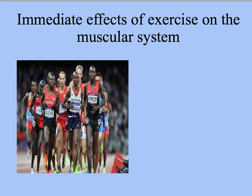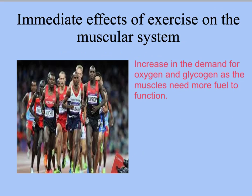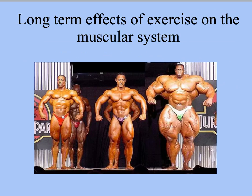Looking at the immediate effects of exercise on the muscular system: there is an increase in the body's demand for oxygen and glycogen. Glycogen is converted to glucose to provide muscles with energy. As muscles contract harder, extra waste products are created. When oxygen demand is so high that not enough can be provided to the muscles, lactic acid begins to build up and can eventually lead to cramp. Long-term effects include an increase in muscle size and strength, known as hypertrophy.